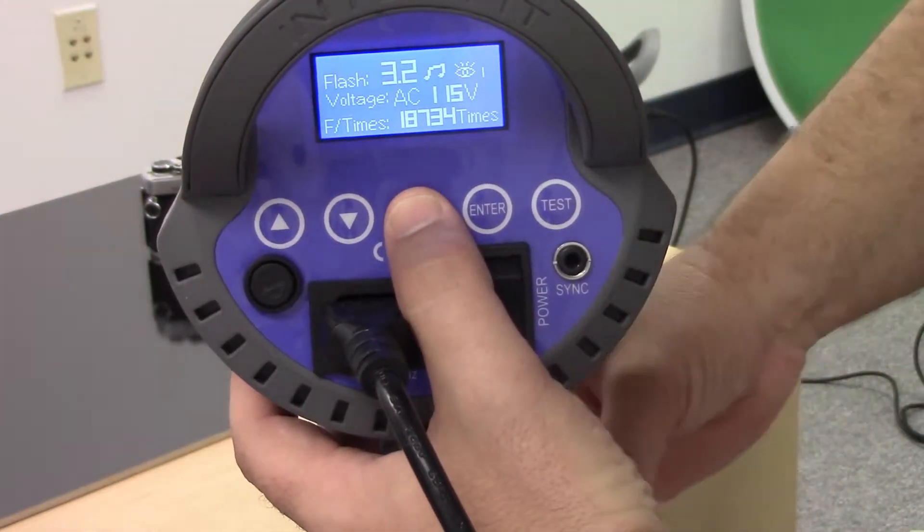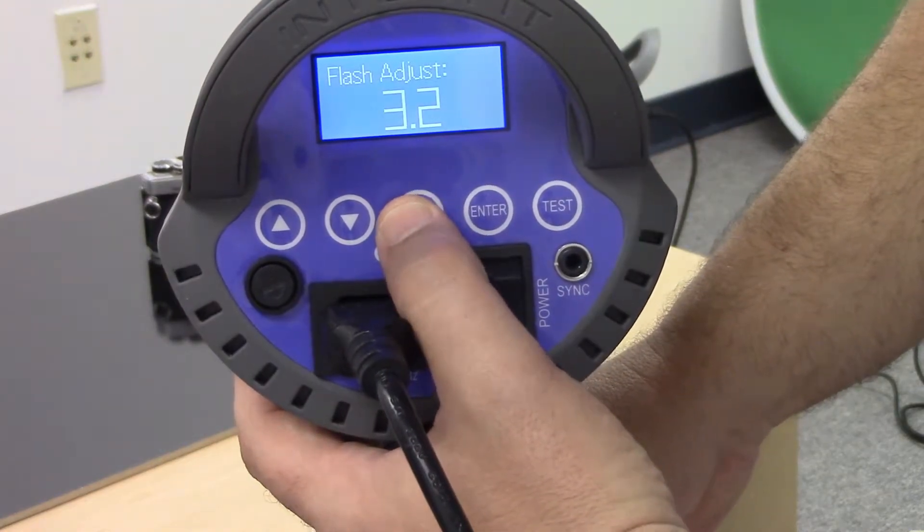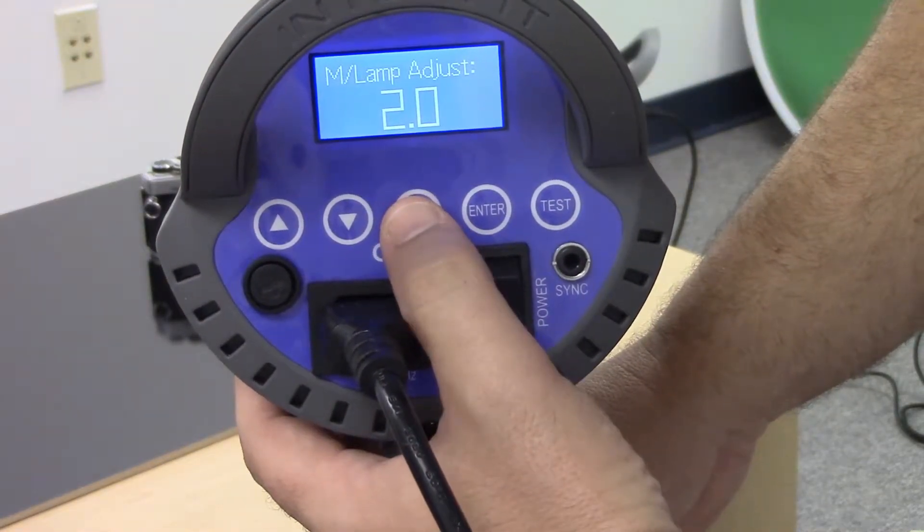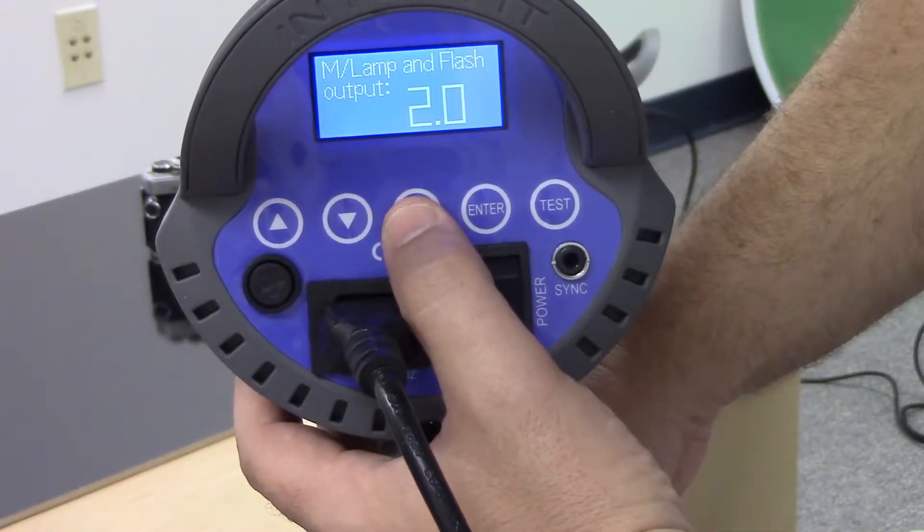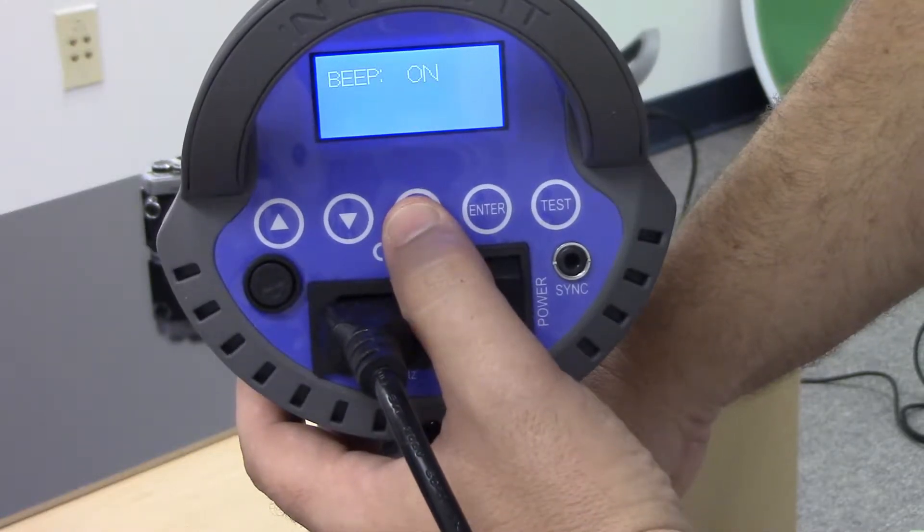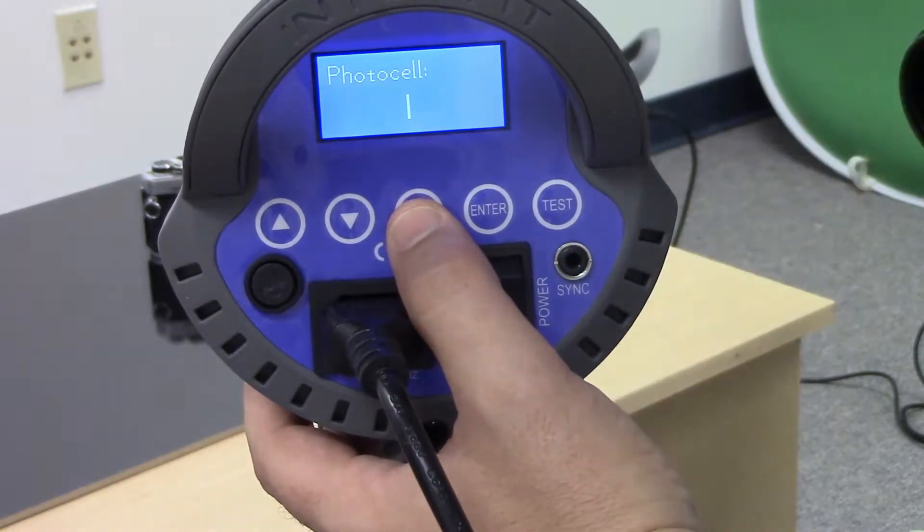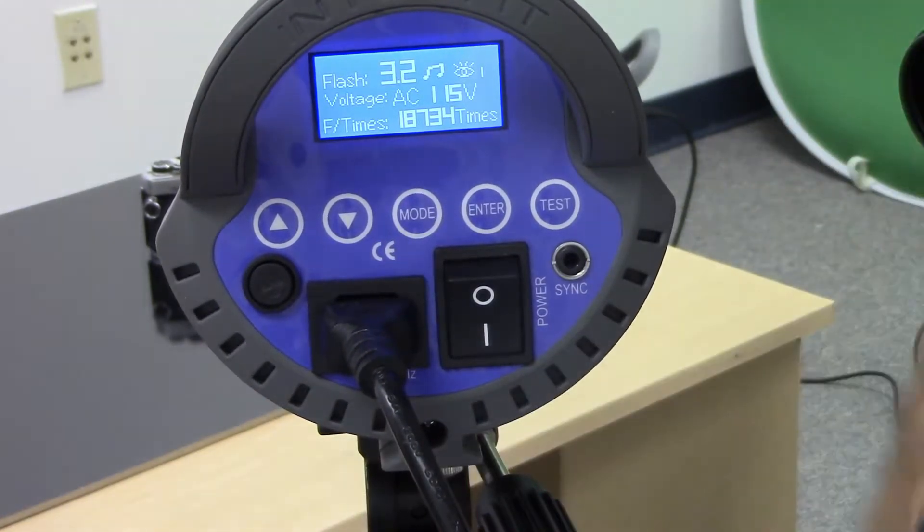Our mode button allows us to cycle through these menus and we have flash adjust. We have modeling lamp adjust. We have the modeling lamp and the flash power adjust. We have the beep, the photo cell and I think that was it, yeah. That's pretty much the menu.